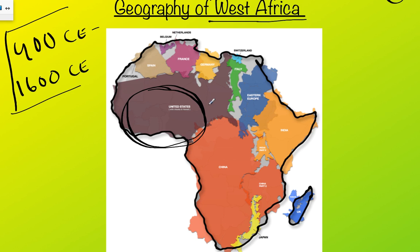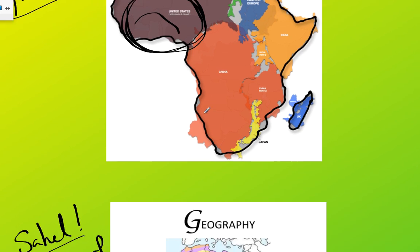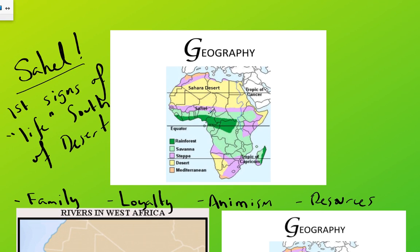The United States is around 4 million square miles. Africa, the continent, is nearly three times the size of that. You can see all of the US, most of Western Europe, India, China — all fit in terms of their actual square mileage inside the continent of Africa. So we're going to zero in on three great empires from this territory, this part of Africa — West Africa.